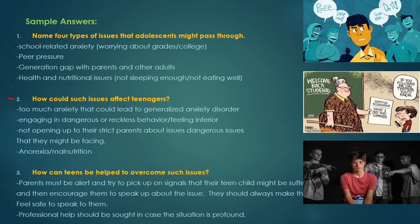Question number two: how could such issues affect teenagers? For example, issue number one — school-related anxiety and college-related anxiety. Too much of this could cause or lead to generalized anxiety disorder where the teenager just shuts down or feels depressed, and might need clinical or professional help.